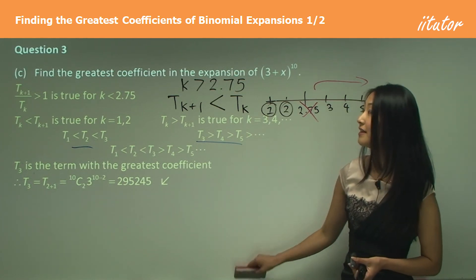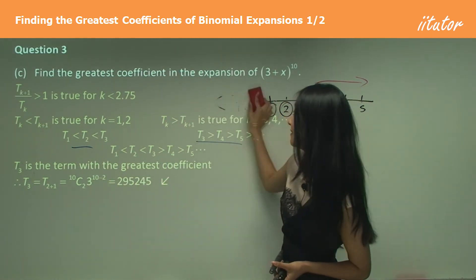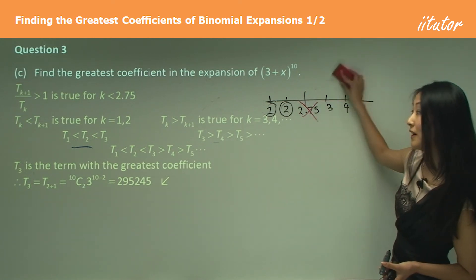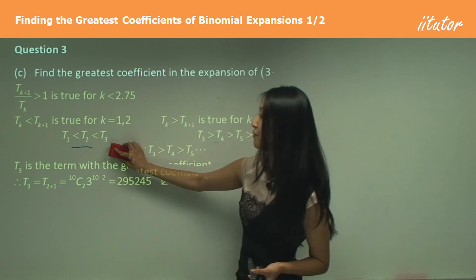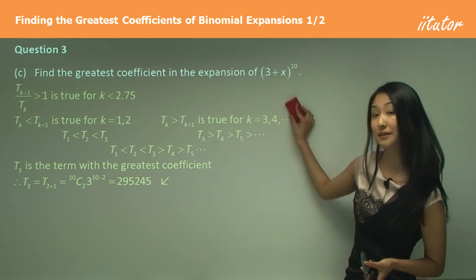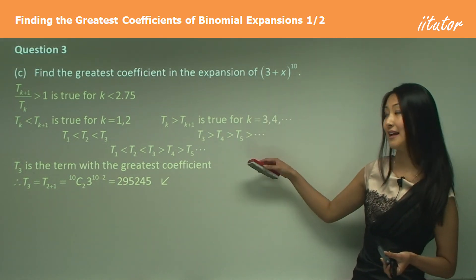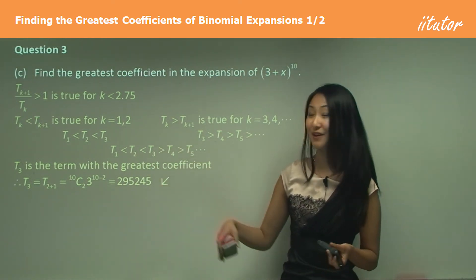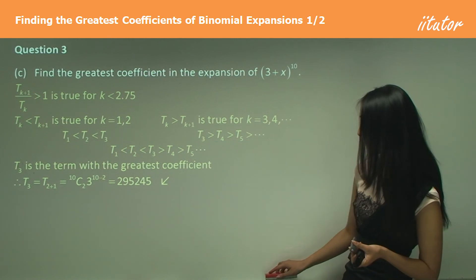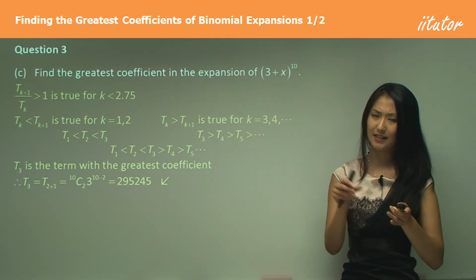To summarise: we found the ratio, then worked out when it's greater than 1, which was when k is less than 2.75. We considered whole numbers less than 2.75 — that's 1 and 2 — and found t3 is greater than t2, greater than t1. Then we considered numbers greater than 2.75 — 3, 4, 5 — and found t3 is greater than t4, greater than t5, and so on. Putting it together, t3 has the greatest coefficient. Remember, don't just stop there — actually work out the coefficient value. There are very specific steps to follow.